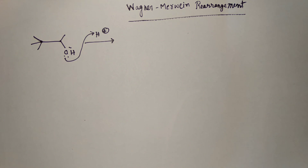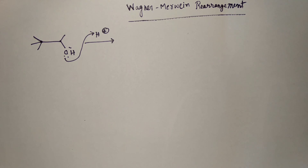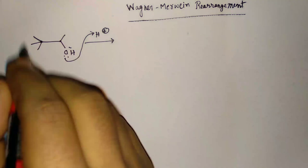In Wagner-Meerwein rearrangement, this type of rearrangement occurs at an electron-deficient carbon atom. The species migrates from one center to another carbon atom which is electron deficient.